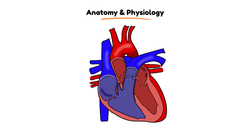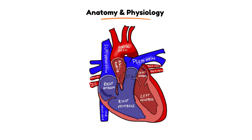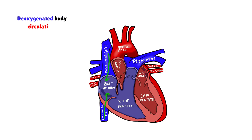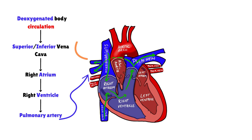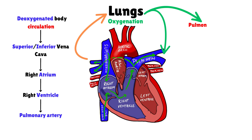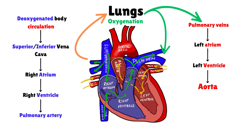The heart has four chambers and functions as two perfectly coordinated pumps. Deoxygenated blood from the body returns to the right atrium through the superior and inferior vena cava. From there, it passes through the tricuspid valve into the right ventricle, which then pumps it through the pulmonary artery toward the lungs. After oxygenation takes place, the blood returns to the left atrium via the pulmonary veins, passes through the mitral valve into the left ventricle, and is finally ejected into the aorta, distributing oxygen-rich blood throughout the body.